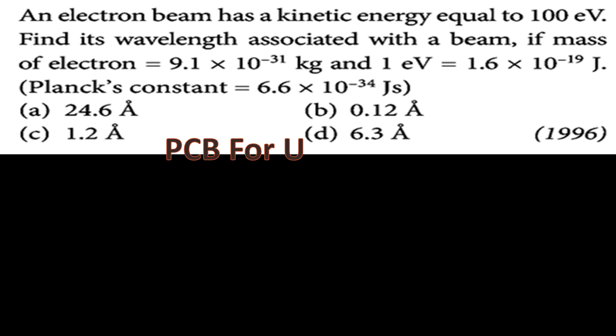An electron beam has a kinetic energy equal to 100 electron volts. Find the wavelength associated with the beam, given mass of an electron is 9.1 × 10⁻³¹ kg, 1 electron volt equals 1.6 × 10⁻¹⁹ joules, and Planck's constant h equals 6.6 × 10⁻³⁴ joules.